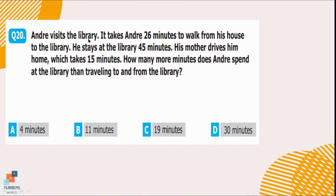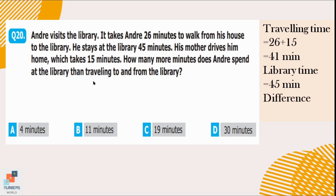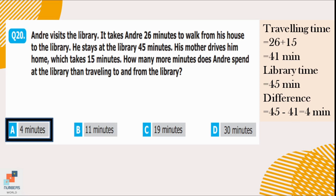Question number 20. Andrew visits the library. It takes him 26 minutes to walk from his house to the library. He stays at the library 45 minutes. His mother drives him home in 15 minutes. How many more minutes does Andrew spend at the library than traveling to and from the library? The total traveling time is 26 plus 15 equals 41 minutes. He spends 45 minutes in the library. The difference is 45 minus 41 equals 4 minutes. So option A is correct — he spends 4 minutes more in the library than traveling.